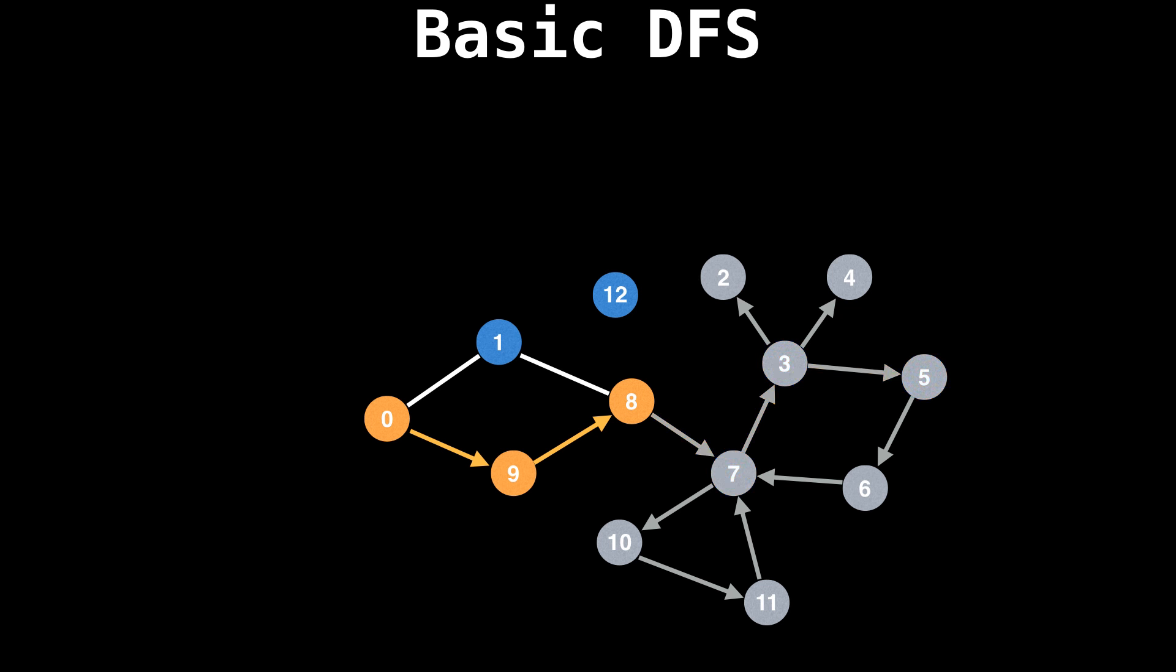From node eight, we still need to visit its last edge, which goes to node one. Node one back to node zero. We can't go to node zero because we're currently exploring it, then backtrack all the way to zero, which completes our depth first search traversal of this graph.